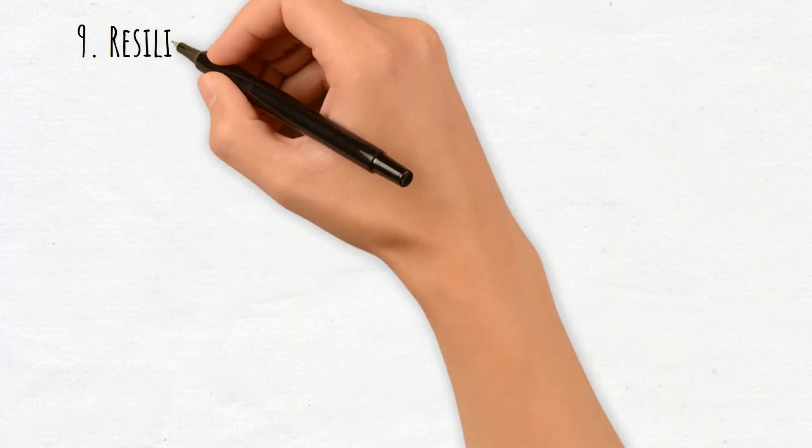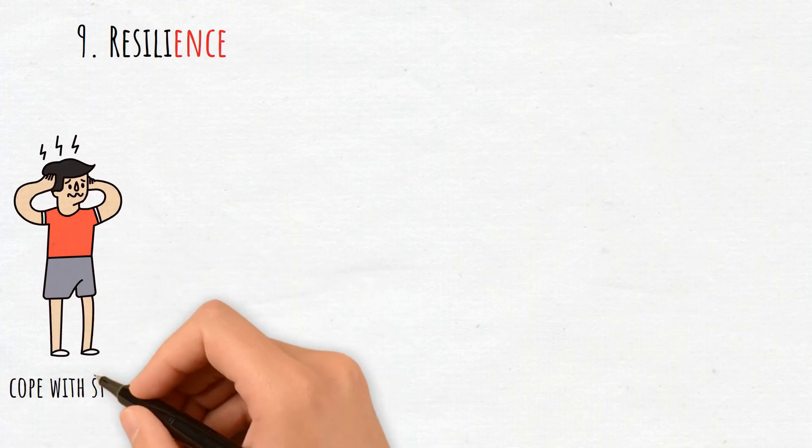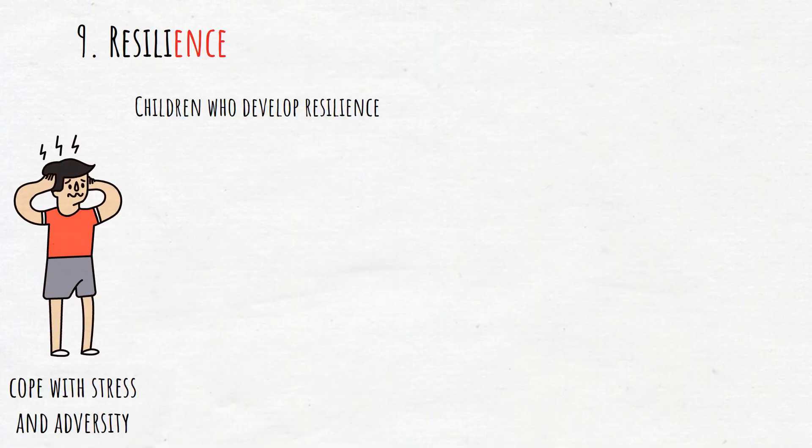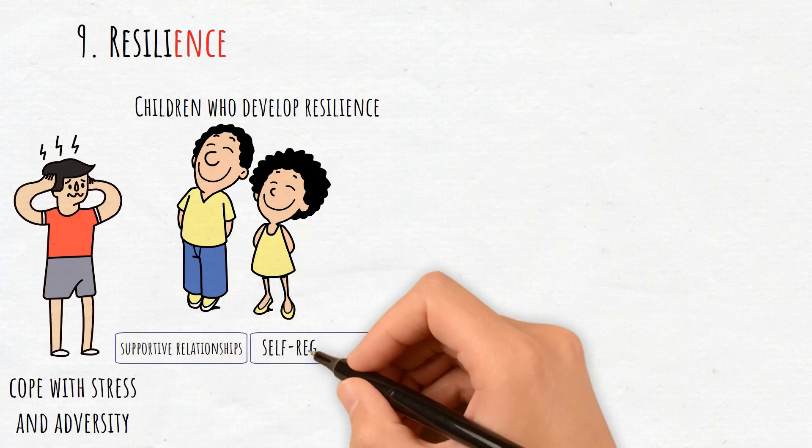9. Resilience. Resilience involves the ability to cope with stress and adversity. Children who develop resilience are better equipped to overcome challenges thanks to supportive relationships, self-regulation, and adaptability.